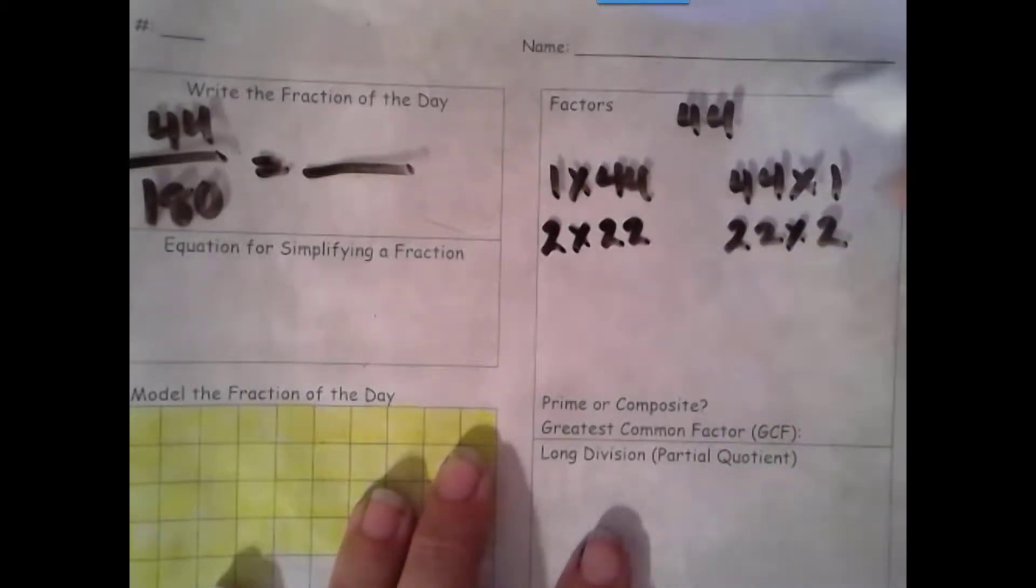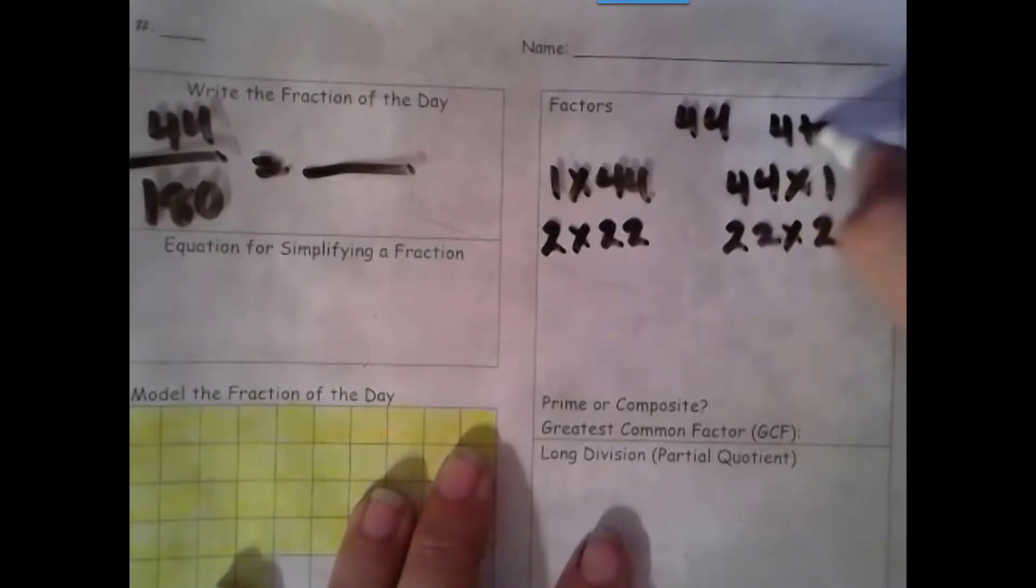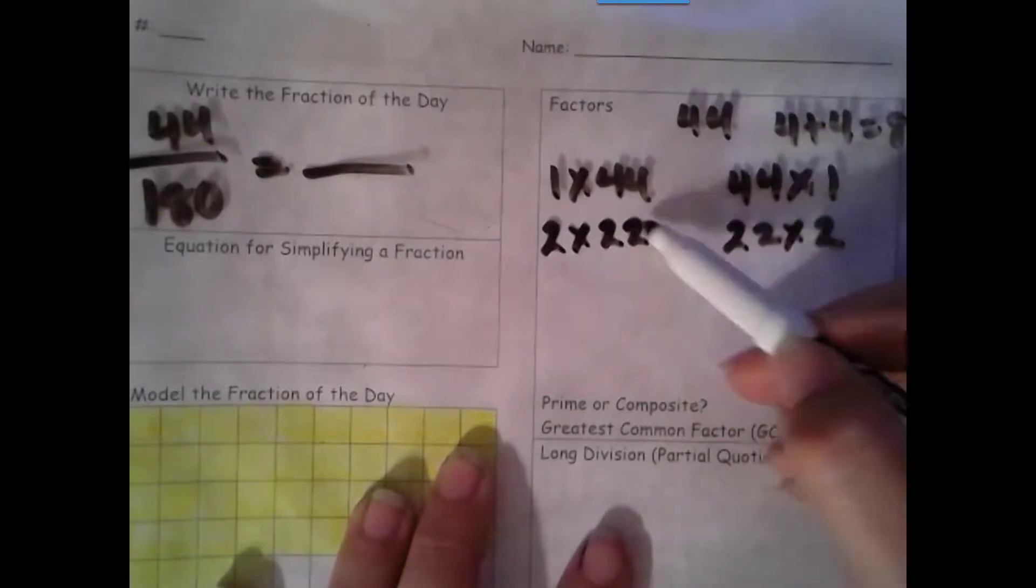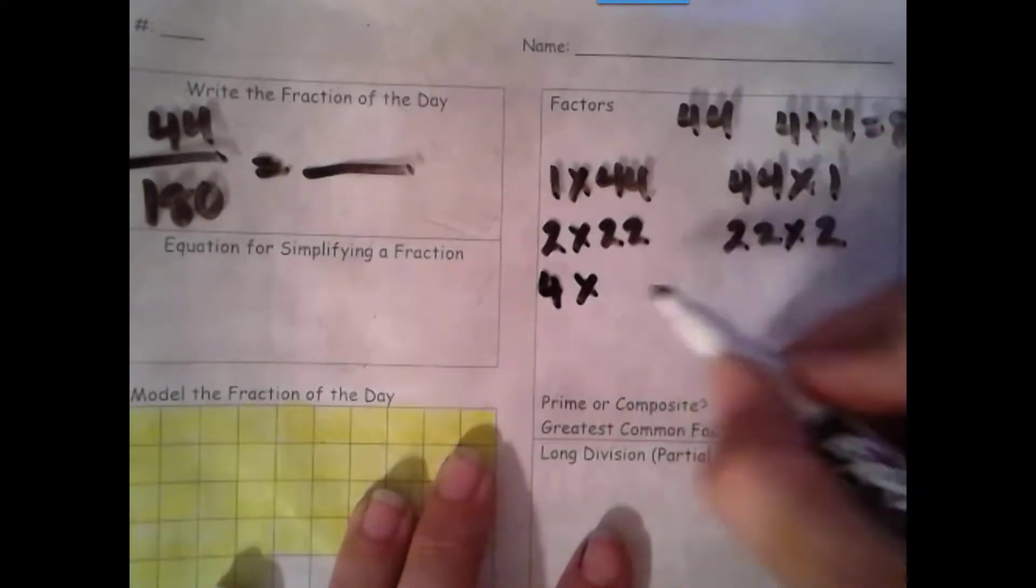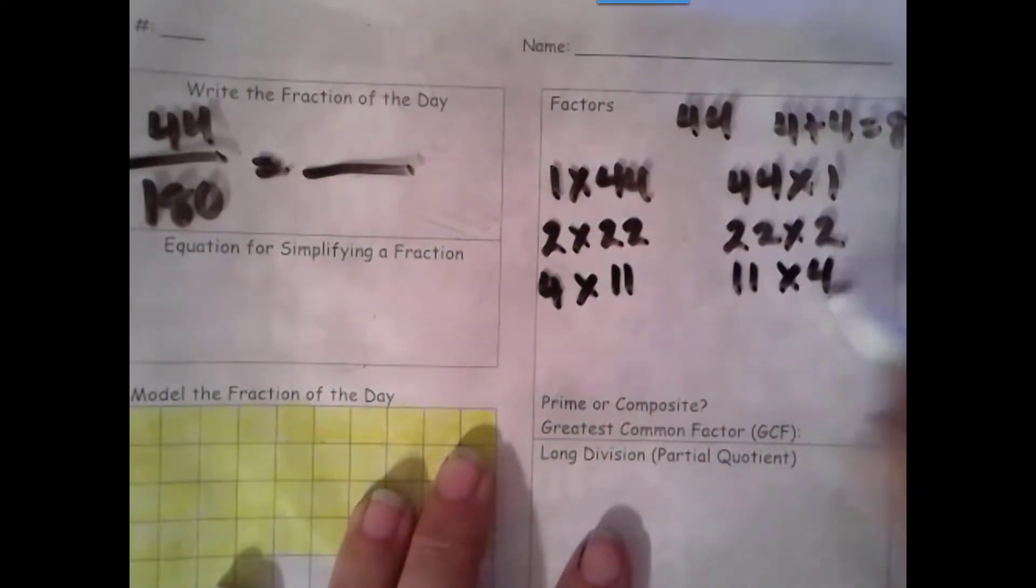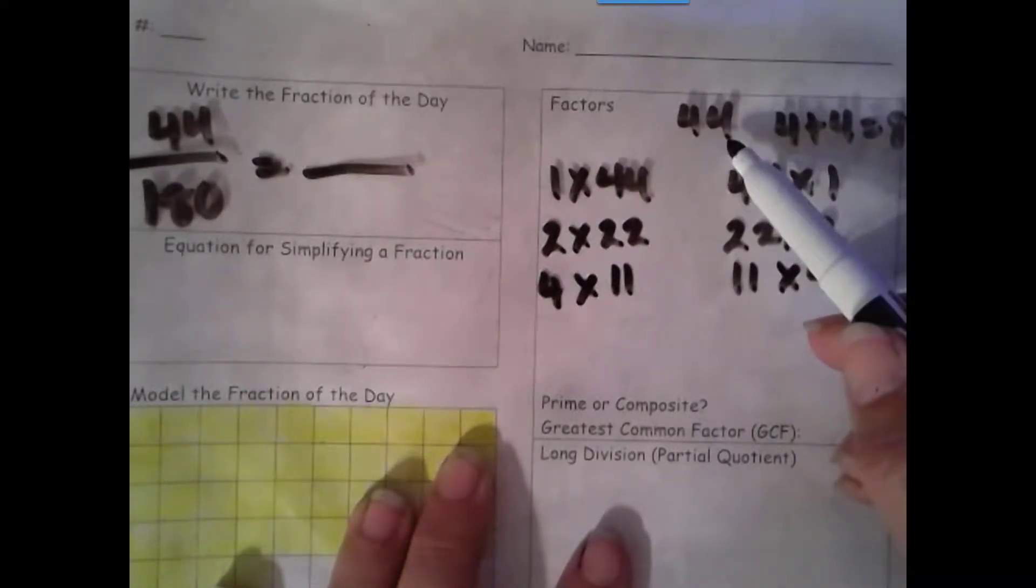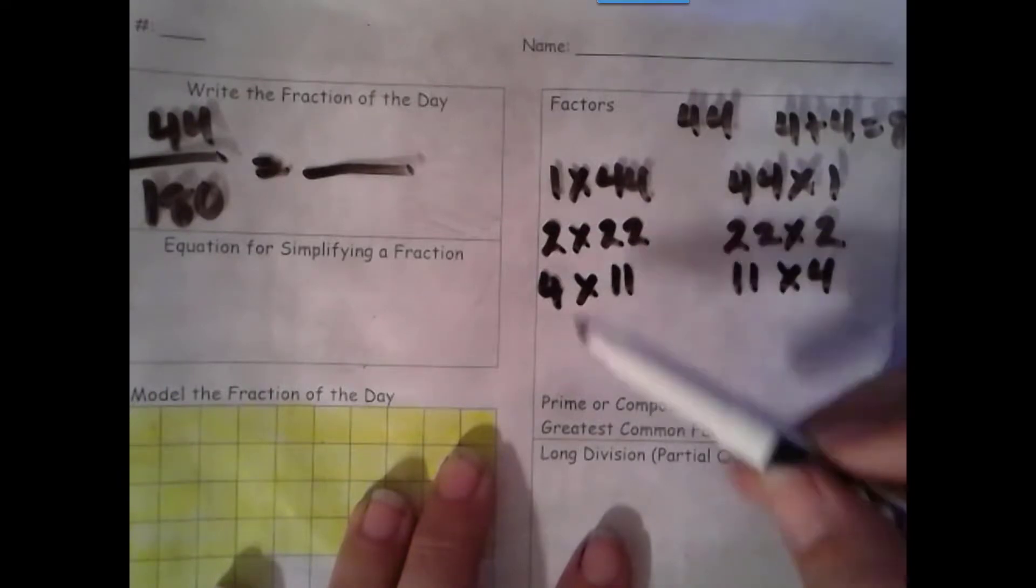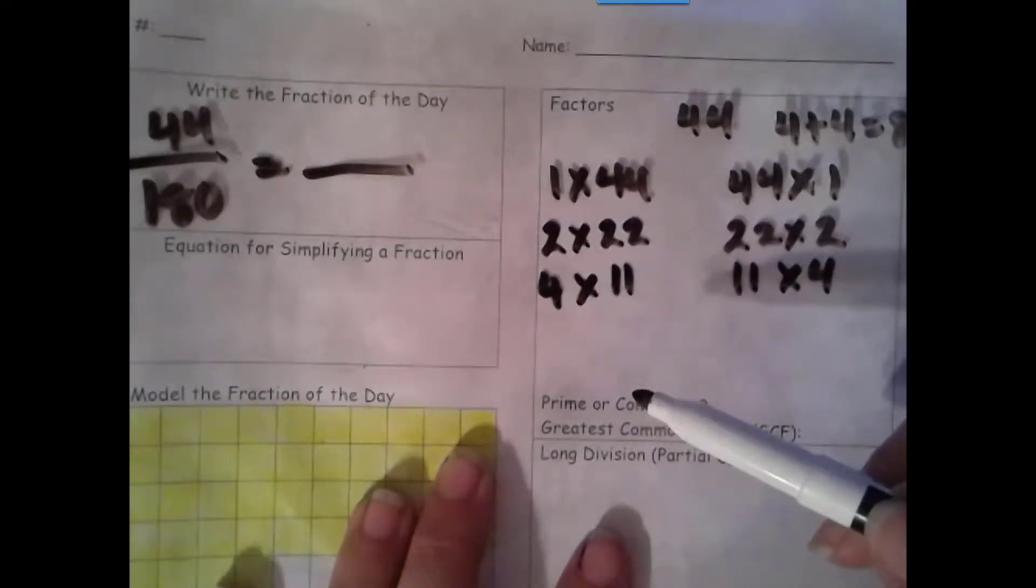Now we're going to check for 3. The rule for 3 is that we add the digits together. 4 plus 4 is 8. 8 is not a multiple of 3, so 3 is not a factor. We try 4. One way to check is to see if the second factor with 2 is even. 22 is even, so 4 is a factor. 4 times 11, 11 times 4. We try 5. The rule for 5 is that it ends in a 0 or 5. It ends in a 4, so 5 is not a factor. We try 6. The rule for 6 is that both 2 and 3 are factors. 2 is, but 3 is not, so 6 is not a factor.